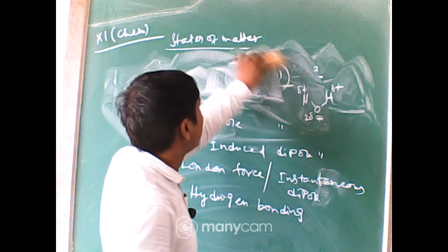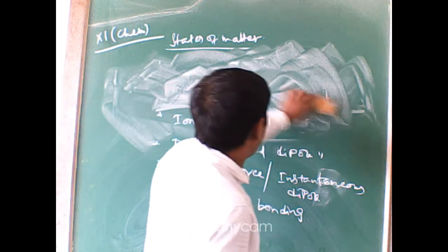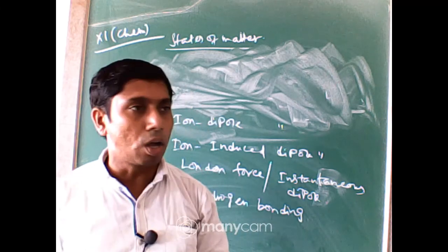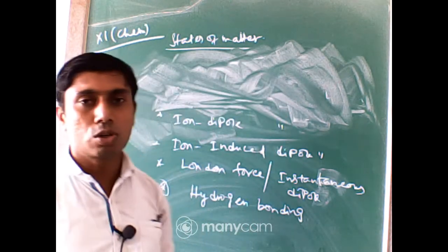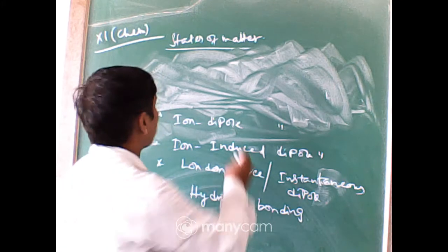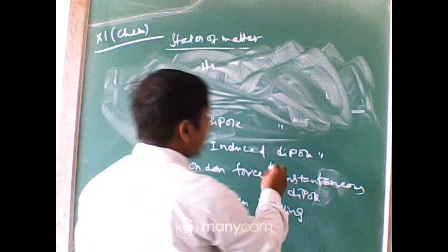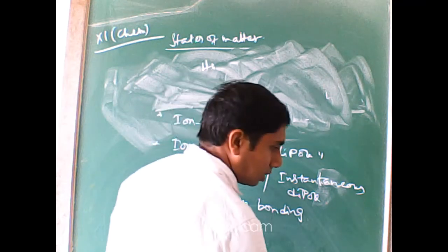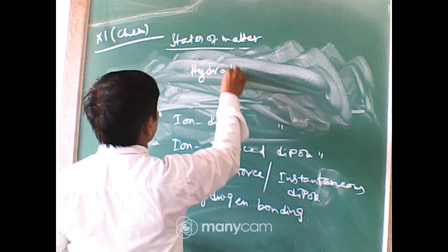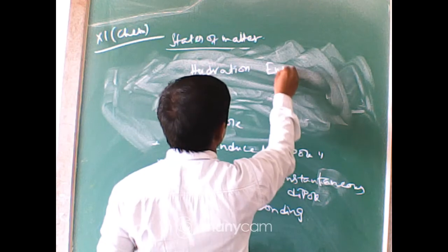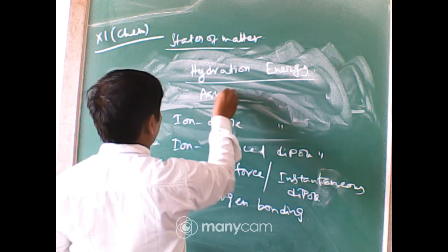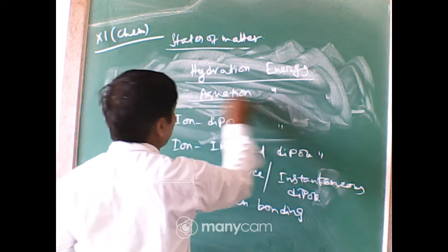The energy released during this solvation process is called hydration energy or aquation energy — specifically aquation energy when the solvent is water, and solvation energy in general. This energy helps continue the dissolving process by further breaking apart the positive and negative charges in the salt.